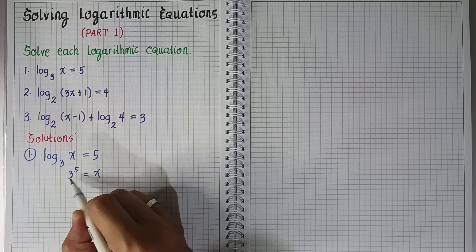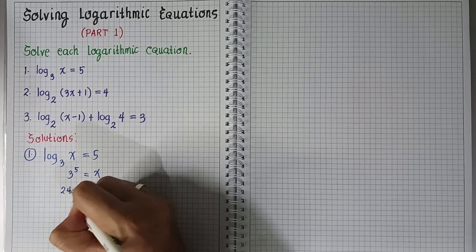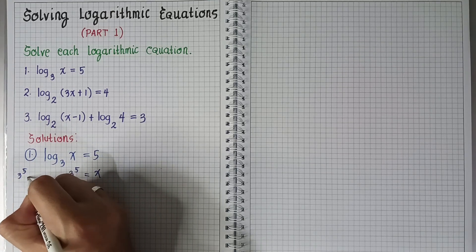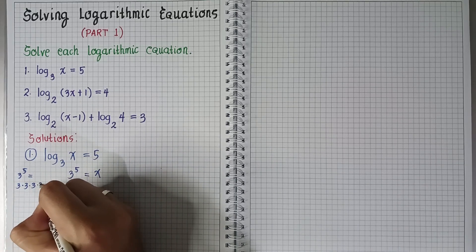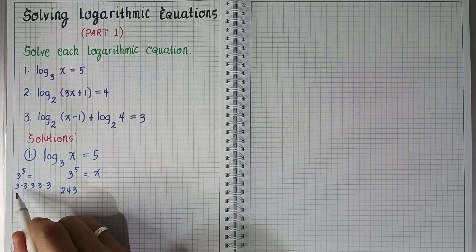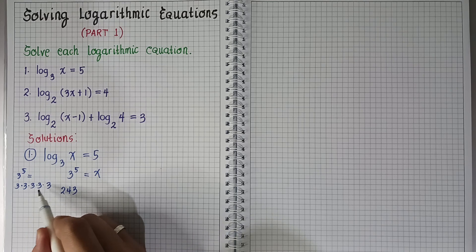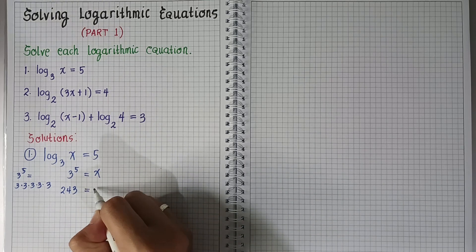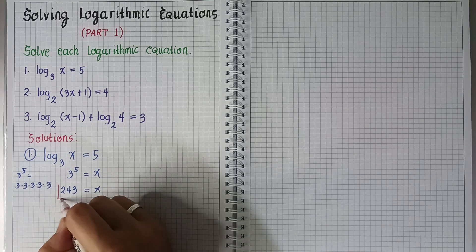So 3 to the fifth power is equal to 243. This is because 3 raised to 5 means 3 times 3 times 3 times 3 times 3. So 3 times 3 is 9, times 3 is 27, times 3 is 81, and 81 times 3 is 243. So x equals 243.